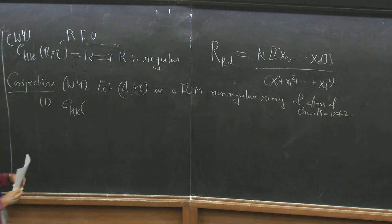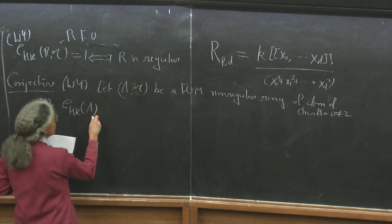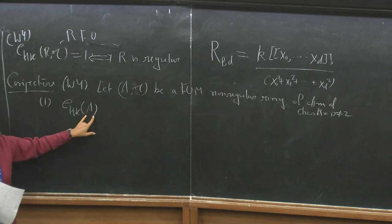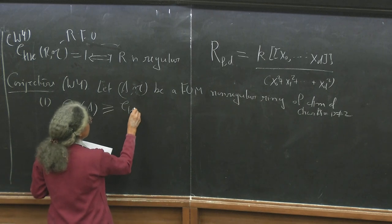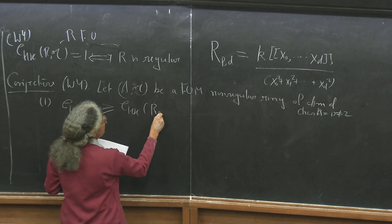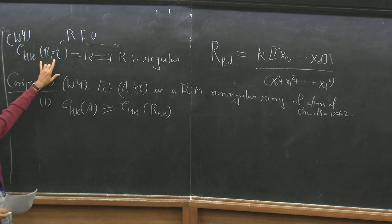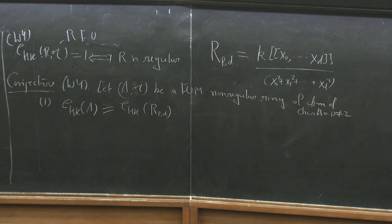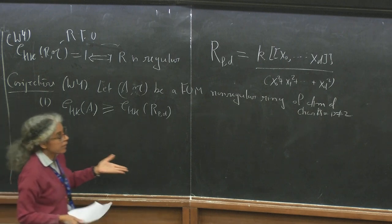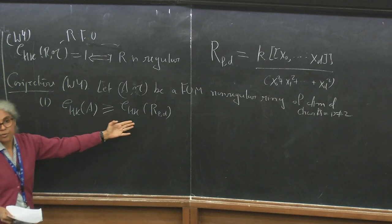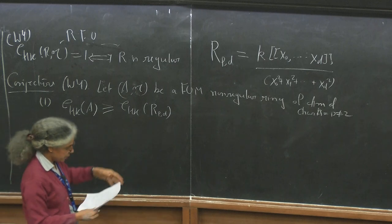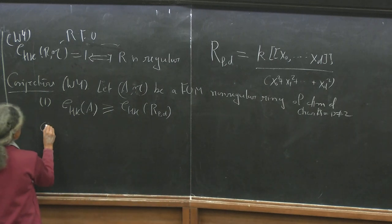The first part of the conjecture is about the lower bound. It says EHK of R — where I mean multiplicity with respect to the maximal ideal — is always greater than or equal to EHK of R_P^D. This says: for any non-regular ring, the lower bound is achieved by the quadratic hypersurface, just as the regular case achieves the polynomial ring bound of 1. The quadratic hypersurface is the best-behaved non-regular ring vis-à-vis HK multiplicity.